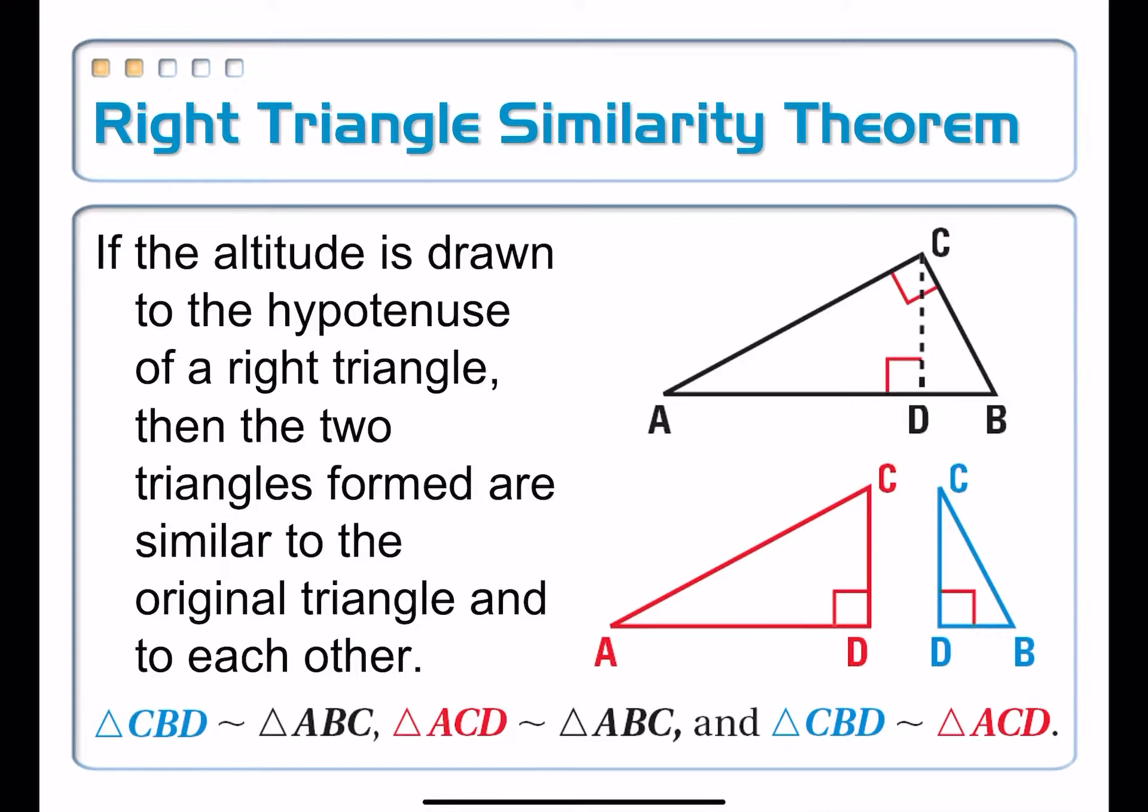All of that is summarized in what we call the right triangle similarity theorem. So for your notes, if the altitude is drawn to the hypotenuse of a right triangle, then the two triangles formed are similar to the original triangle, and similar to each other. And it's pretty easy to prove just simply based on angle-angle, as we saw in that little activity.